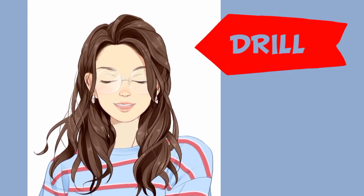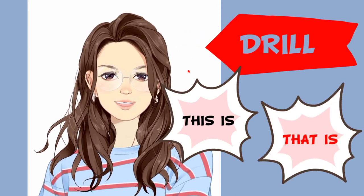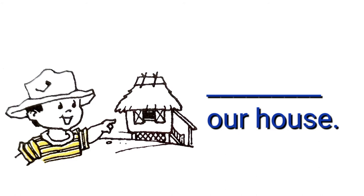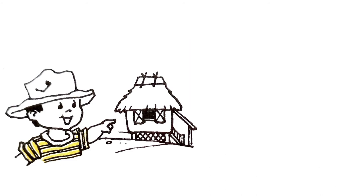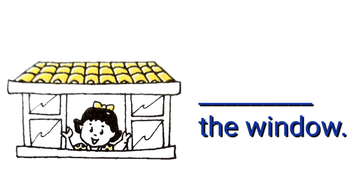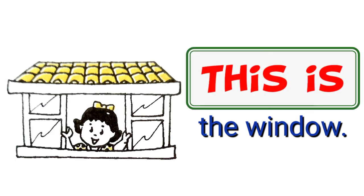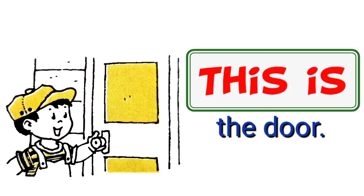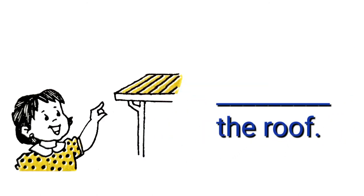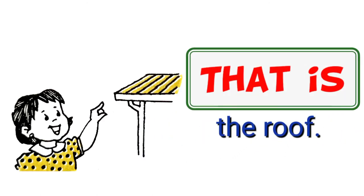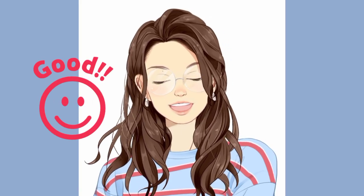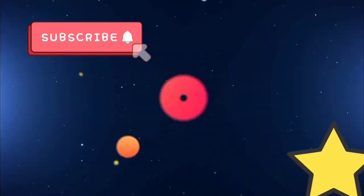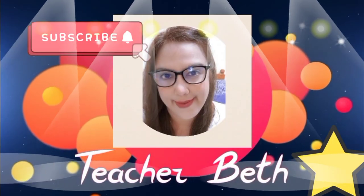Now, let's do the drill. Will you use 'this is' or 'that is' for the sentence? Blank our house. — That is our house. Blank the window. — This is the window. Blank the door. — This is the door. Blank the door. — That is the door. Good job, kids! Now you know the use of 'this is' and 'that is'. We'll be right back.